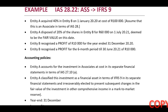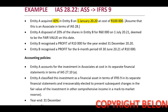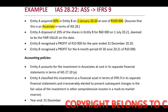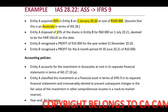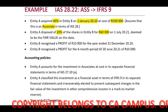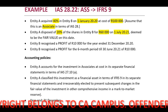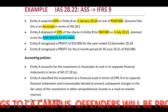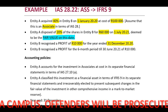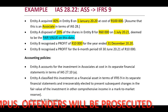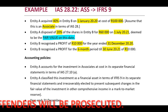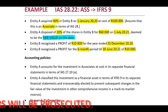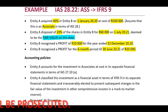Remember that this is a very basic example. Entity A acquired 40% in Entity B on 1 January 2020 at a cost of $100,000. Assume that this is an associate in terms of IAS 28. Entity A disposed of 20% of the shares in Entity B for $60,000 on 1 July 2021, deemed to be the fair value on this date. Entity B recognized a profit of $10,000 for the year end of 31 December 2020. Entity B recognized a profit for the six-month period till 30 June 2021 of $10,000. Entity A accounts for investments in associates at cost in its separate financial statements in terms of IAS 27 paragraph 10a.